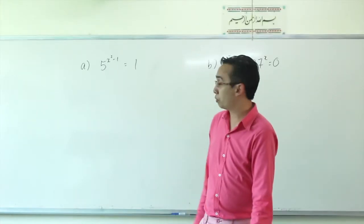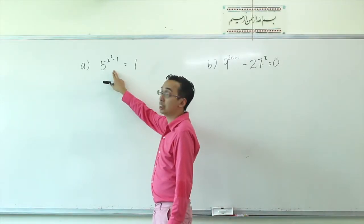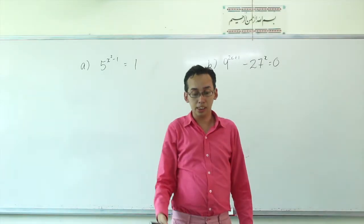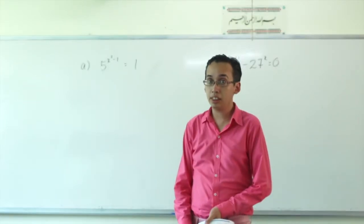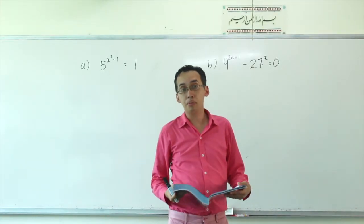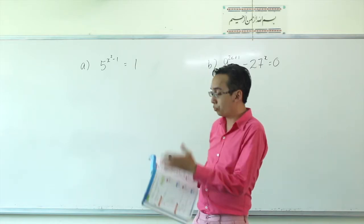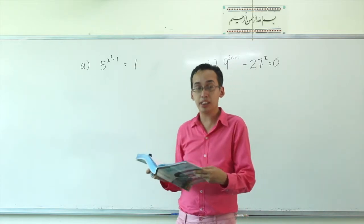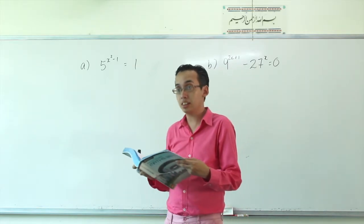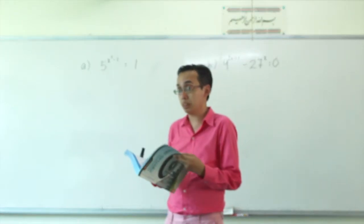One of the ways to solve an indices question where X is in the indices is to make both sides — the left and the right — have the same base. We make it one particular number and nothing else. For example, if we want to make it base 5, then everything on the left must be just base 5 and everything on the right must be just base 5.